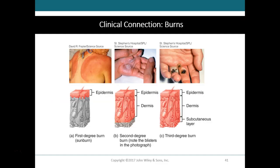A first degree burn involves only the epidermis and is characterized by mild pain and redness but no blisters. Skin function usually remains intact. Sometimes flushing the burn with cold water will lessen the pain and degree of damage. Healing generally occurs in three to six days and may be characterized by some peeling or flaking. A common example of a first degree burn is a sunburn from being at the beach too long.